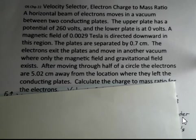There's a magnetic field in the region of the plates of 0.0029 teslas, and it's directed downward. The plates are separated by 0.7 centimeters.